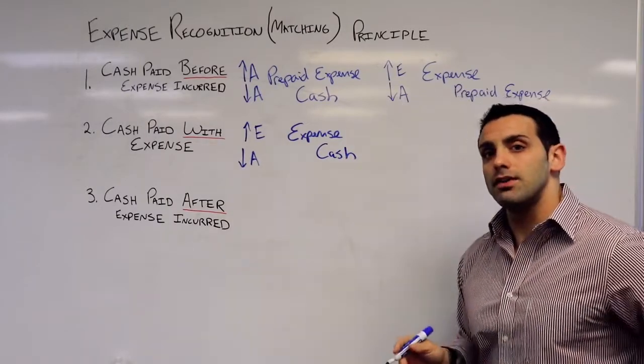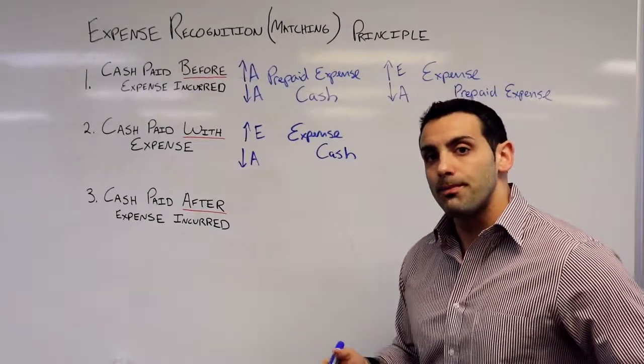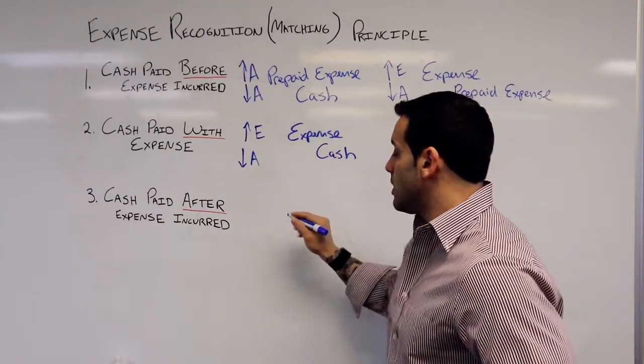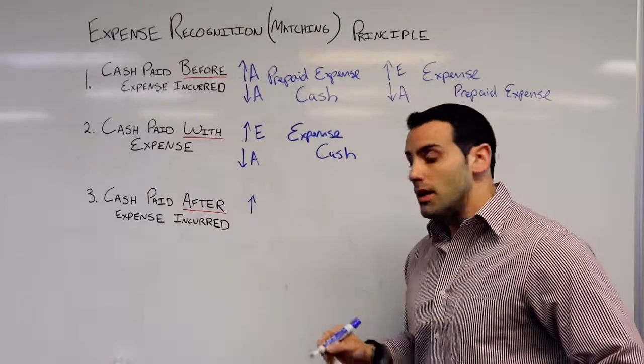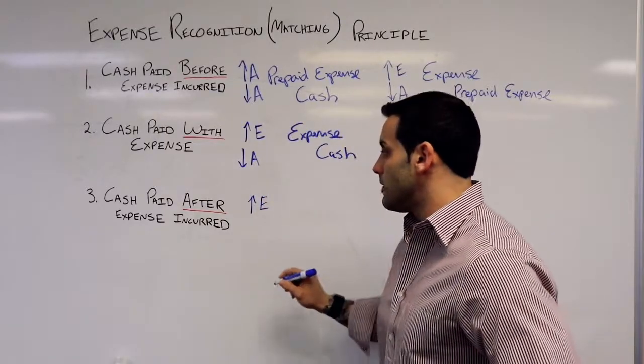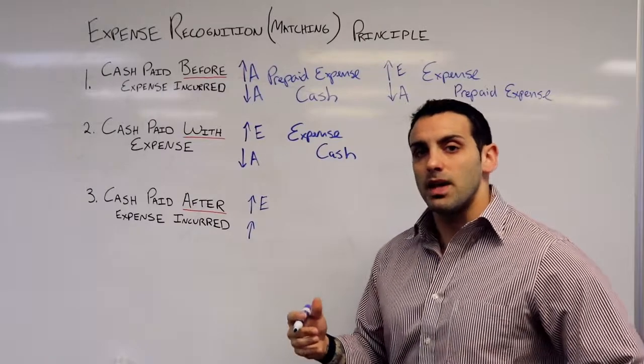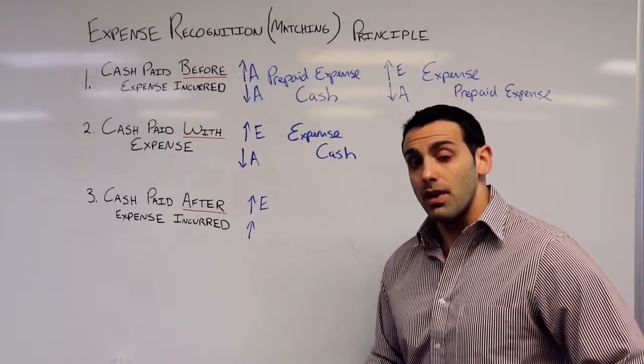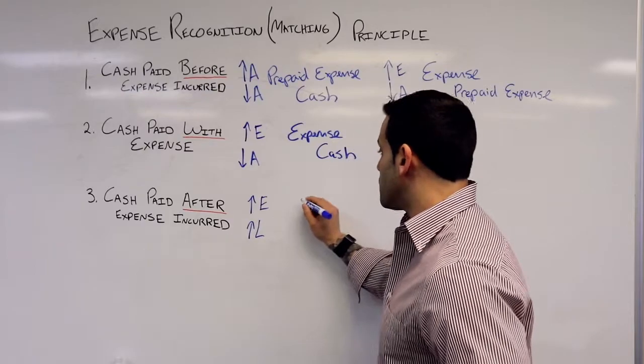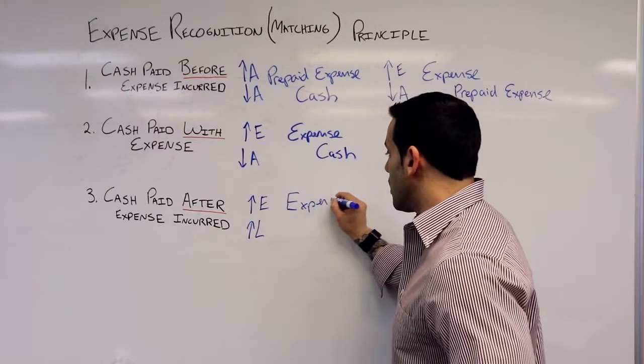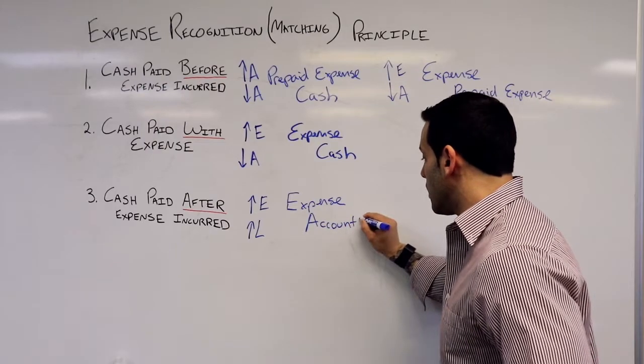And the third and final situation is cash is paid after the expense is incurred. This is a situation where we are going to increase the expense because it incurred. At the same time, we're going to increase our liabilities. This is because the expense has incurred, and we haven't paid for it yet. So I owe my vendor, and this is going to increase liabilities. So I'm going to recognize the expense with a debit, and this is going to create an account payable or liability.